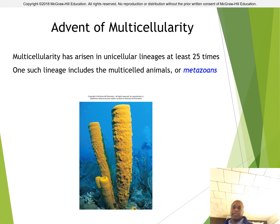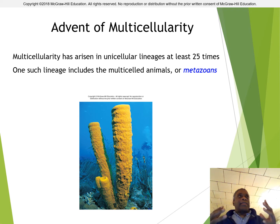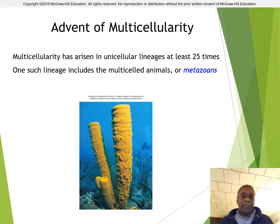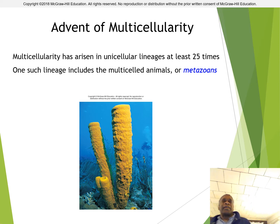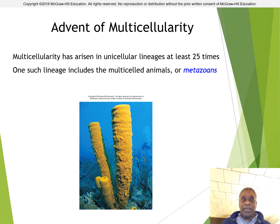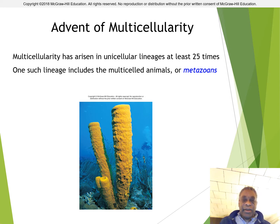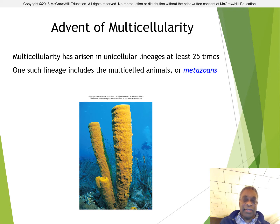One of the big deals about sponges is that this is really the first instance where we see in present-day life forms the origin of multicellularity. We talked about multicellular eukaryotes in Wednesday's lecture. This is the first grouping we'll be talking about where we actually have multicellular life forms, where cells cluster together, differentiate into different functions and types, and form an actual animal. There have been many different origins of multicellularity in the history of life, but the one that really stands out for the rest of the semester are the metazoans, the multicelled animals.